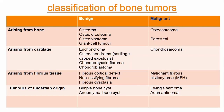For those arising from fibrous tissue, in the benign form we have fibrous cortical defect, non-ossifying fibroma, and fibrous dysplasia. Their malignant form is malignant fibrous histiocytoma, which is MFH.